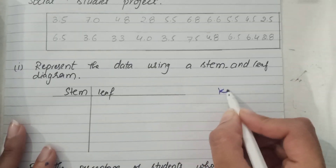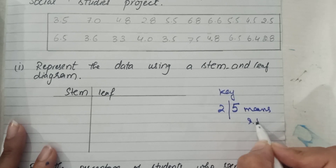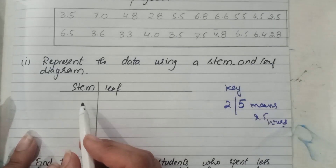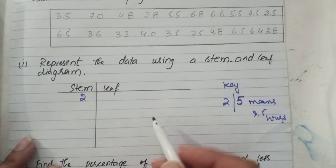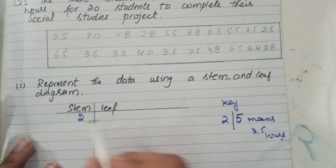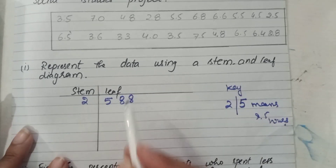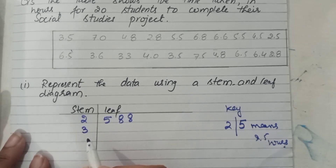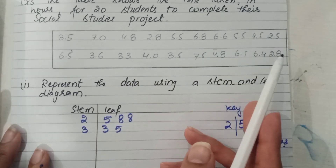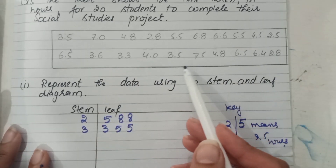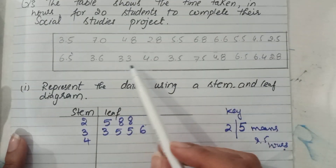To represent the data on a stem-and-leaf diagram, first we write the key: 2 | 5 means 2.5. We write 2 in the stem and all leaves belonging to 2 on that side: 2.5 gives leaf 5, 2.8 gives leaf 8, and again 2.8. Next stem is 3: with leaves for 3.3, 3.5, 3.5, and 3.6.